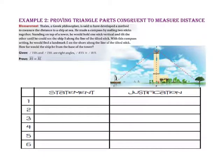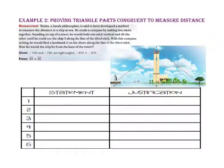In example 2, we will prove triangle parts congruent to measure distance. Thales, a Greek philosopher, is said to have developed a method to measure the distance of a ship at sea. He made a compass by nailing two sticks together. Standing on top of a tower, he would hold one stick vertical and tilt the other until he could see the ship S along the line of the tilted stick.